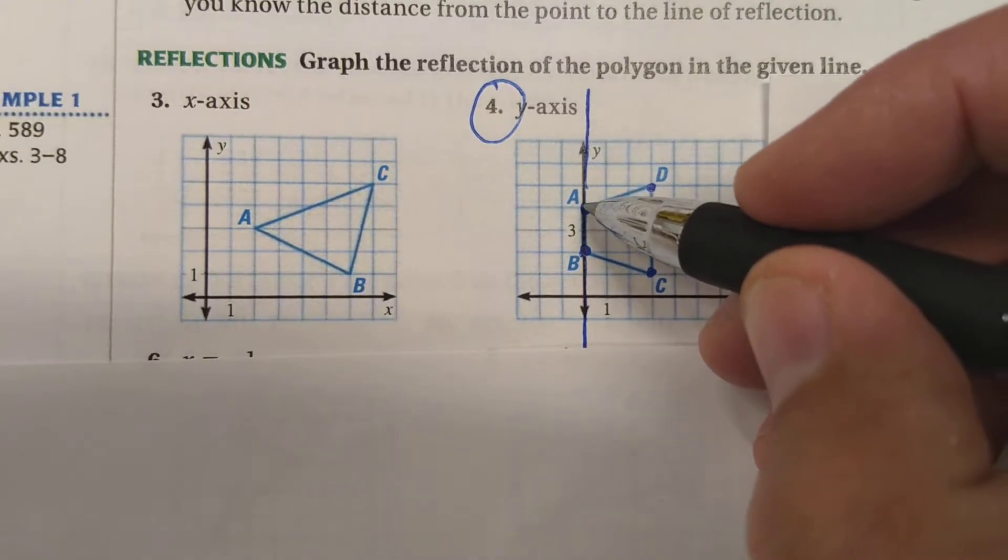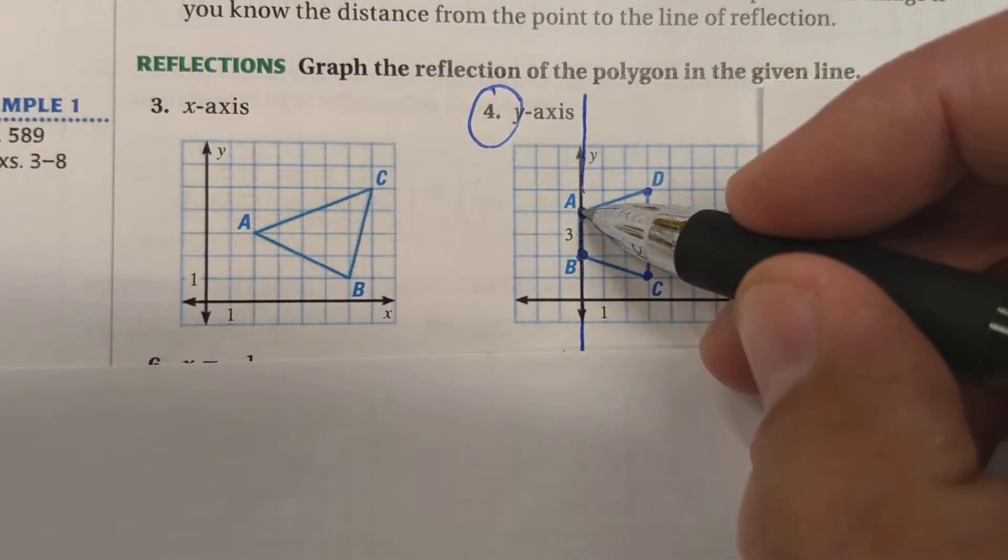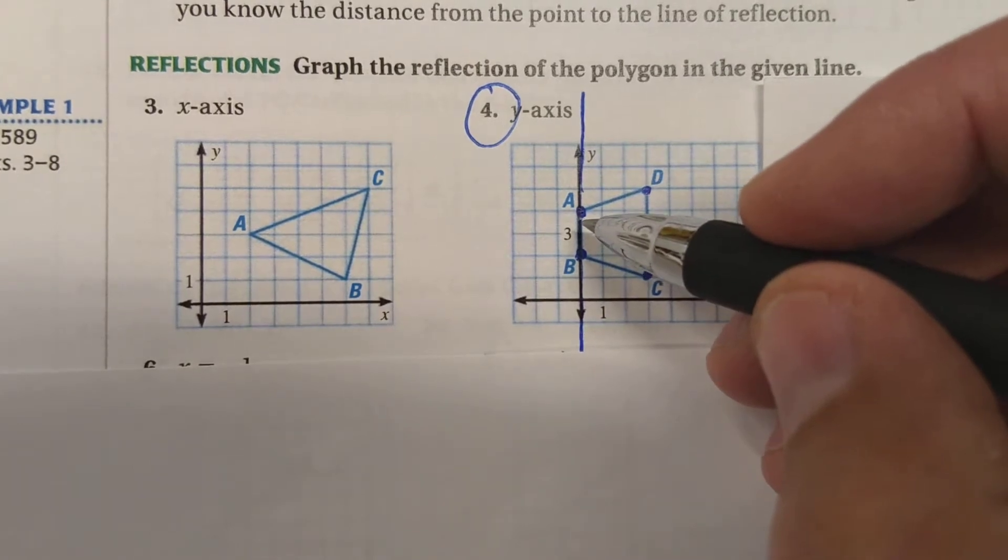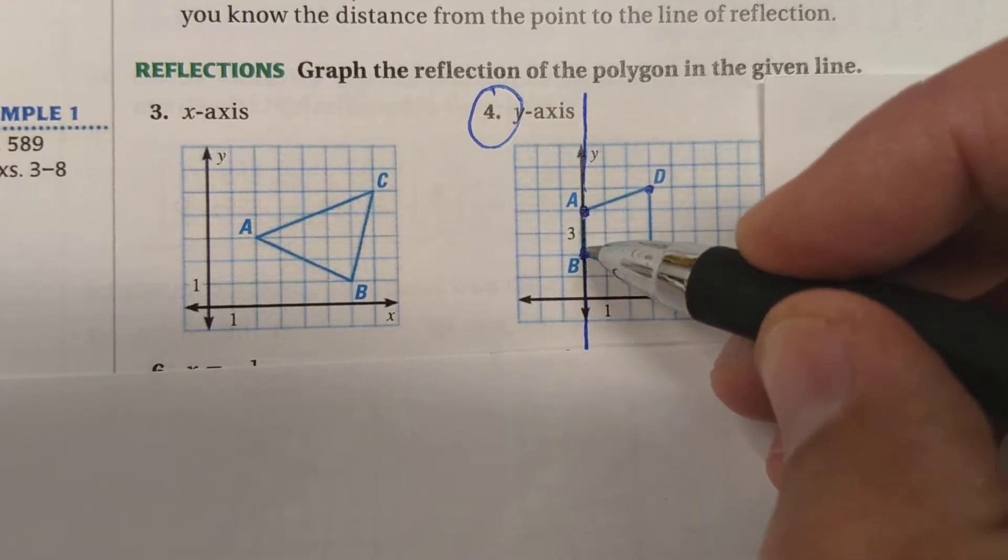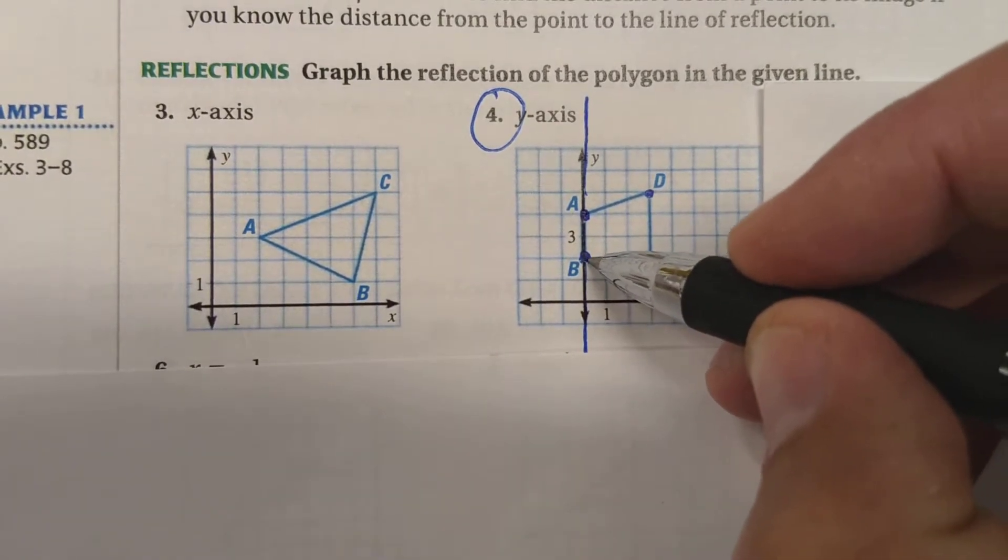So point A and now the new point A prime, that's part of the new prime image, are going to be in the same spot. So A and A prime are both going to be right here. B and B prime are both going to be right here.